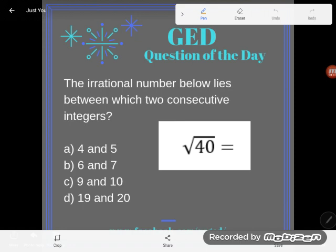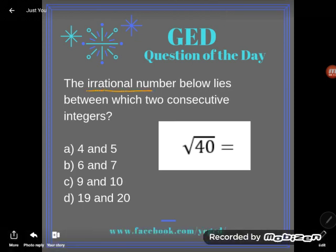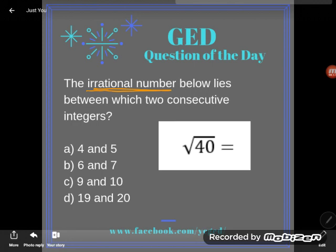It says the irrational number below lies between which two consecutive integers. So a lot of language going on here, let me just break down what they're saying. First of all, they're calling this an irrational number. An irrational number is one whose decimal form goes on and on forever with no pattern.